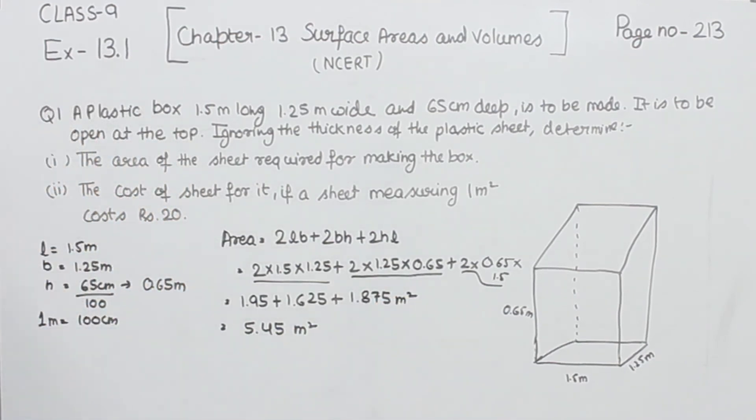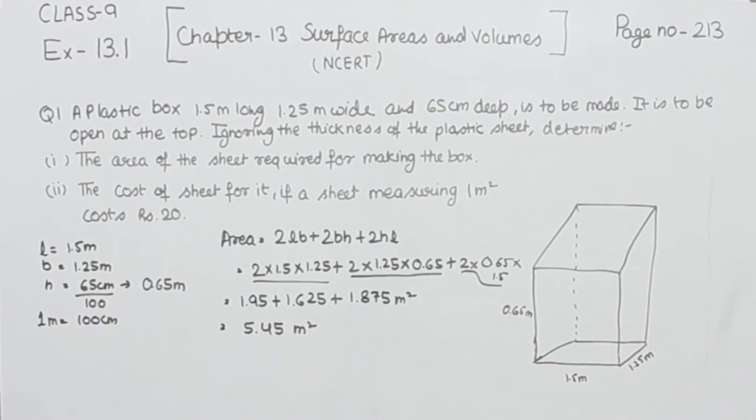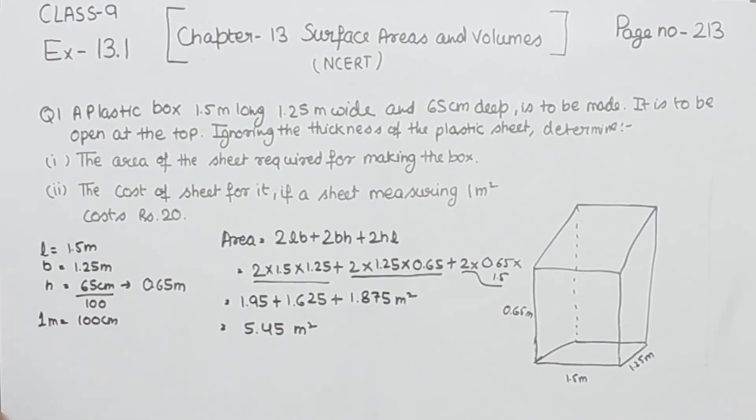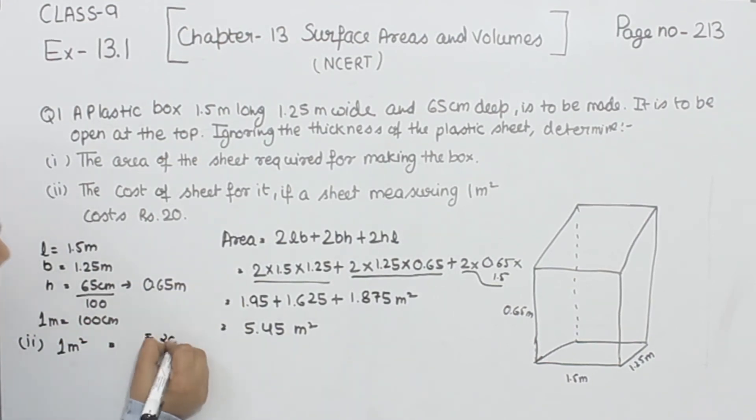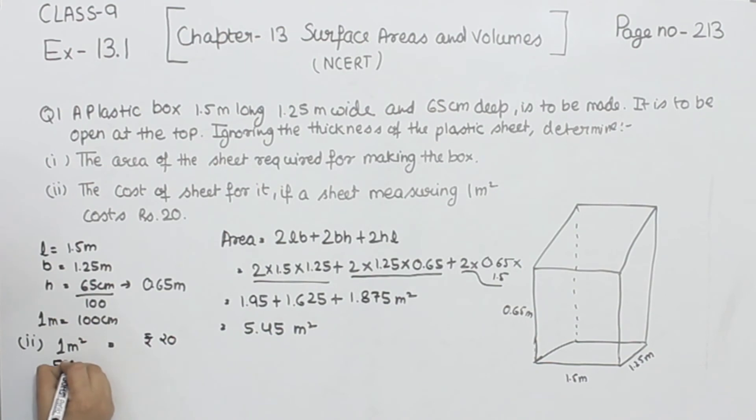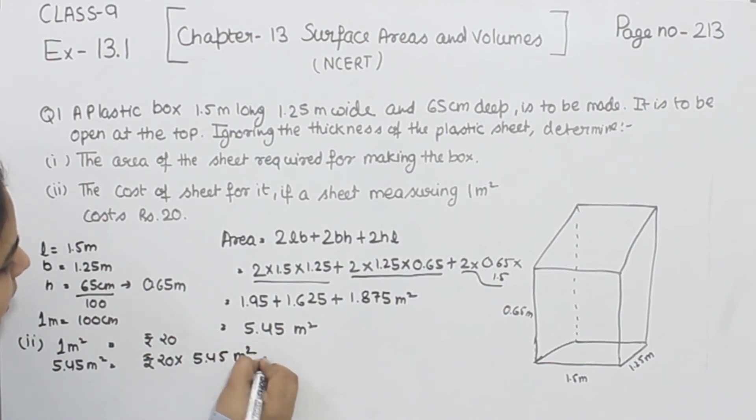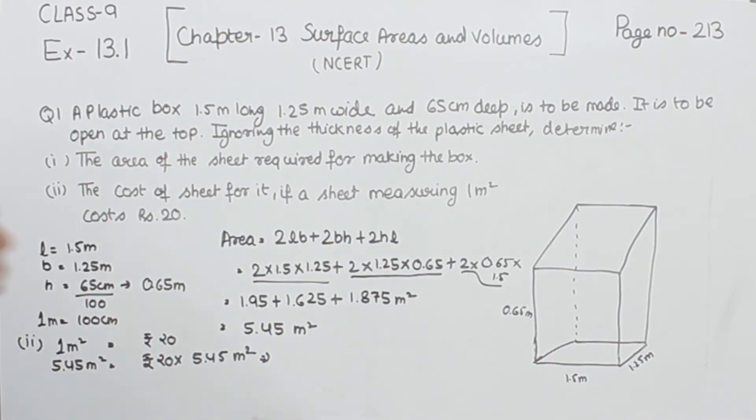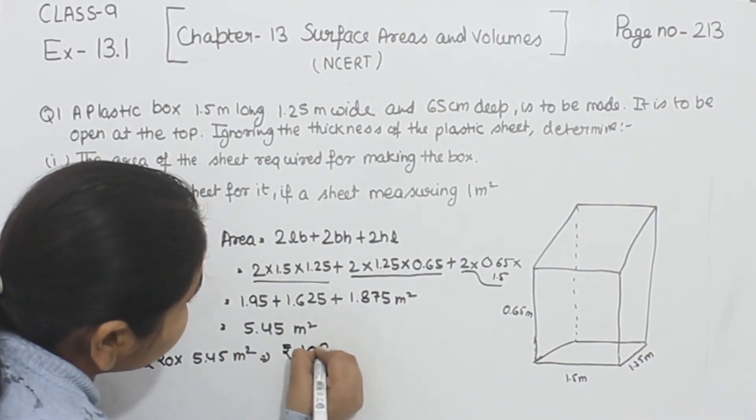So this is the area of the sheet needed for making the box. Now comes the second part. We have to find the cost of the sheet. The cost for 1 square meter is rupees 20, and the area we have is 5.45 square meters, so this will be 20 multiplied by 5.45, which gives us rupees 109.